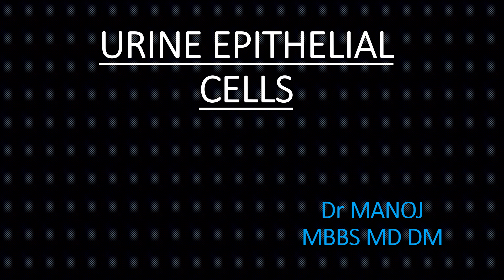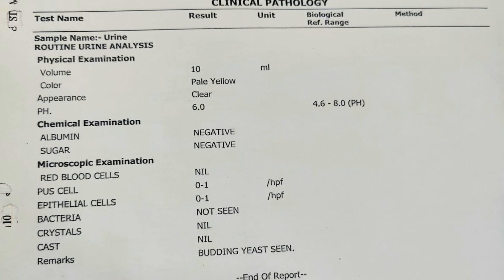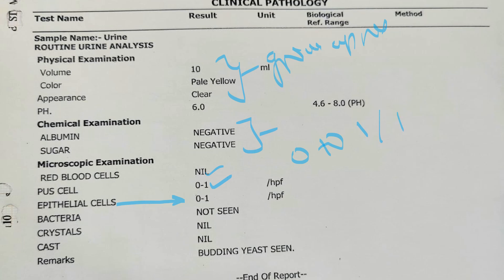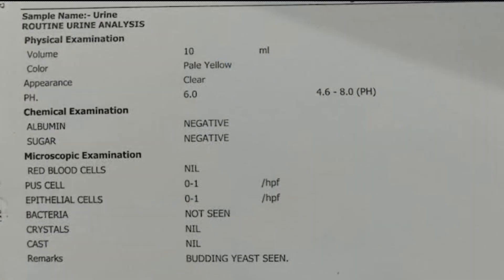Most labs give the urine routine microscopy, also called urine RM, under the following headings: gross appearance and findings, protein excretion and sugar excretion, and the microscopic examination including pus cells and RBC. Here you can see a component called epithelial cells, given under the values as zero to one HPF — HPF meaning high power field.